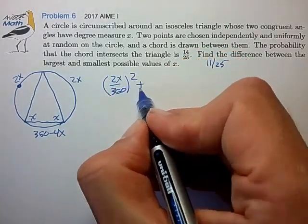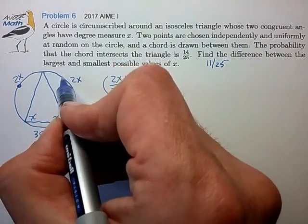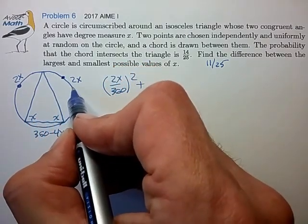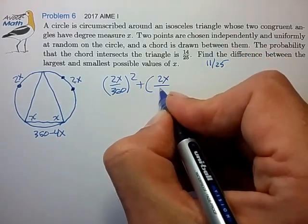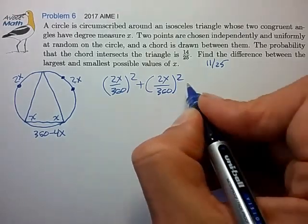We can do the same calculation for the probability that the first point is in this region times the probability that the second point is in this region, and that's just 2X over 360 again squared.